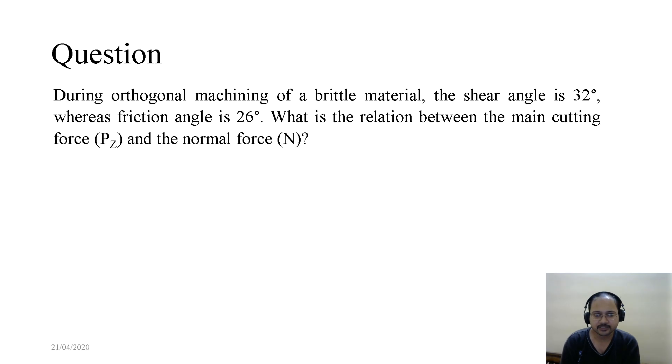Now coming to the next question. During orthogonal machining of a brittle material, the shear angle is 32 degrees, whereas the friction angle is 26 degrees. What is the relation between the main cutting force Pz and the normal force N? So what is given? β equals 32 degrees and η equals 26 degrees.